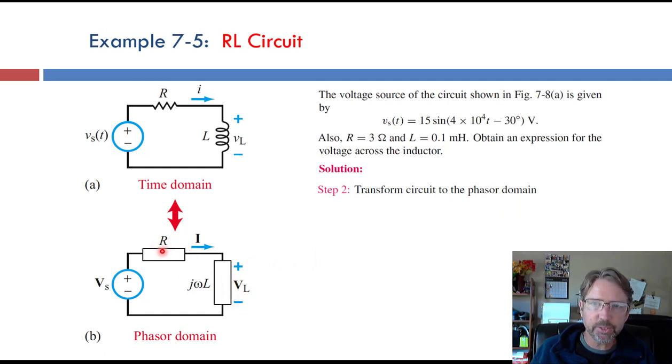So we convert it to the phasor domain with a ZR and a ZL. The impedance of a resistor is just R, and the impedance for an inductor is j omega L. So those are the impedances there. And now we can analyze this circuit just like we would if they were both resistors, using the impedance instead of resistance.